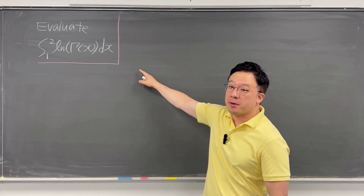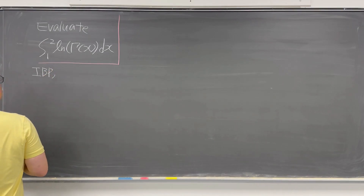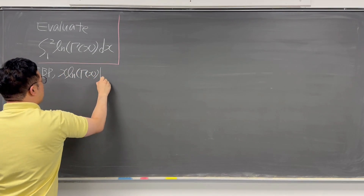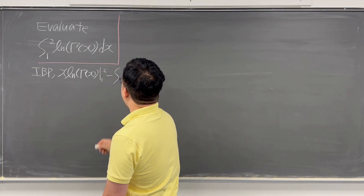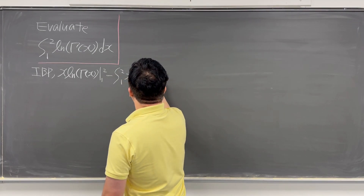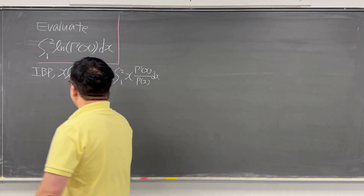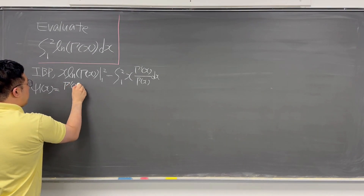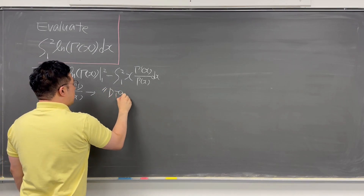First, let's use integration by parts to rewrite this. Applying IBP, this becomes x·ln(Γ(x)) evaluated from 1 to 2, minus the integral from 1 to 2 of x times Γ'(x)/Γ(x) dx. We can define ψ(x) as Γ'(x)/Γ(x), which is the digamma function.